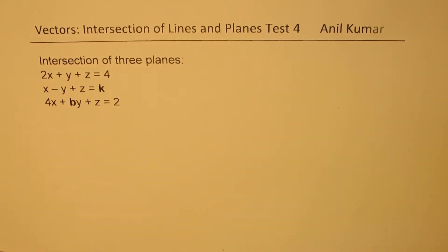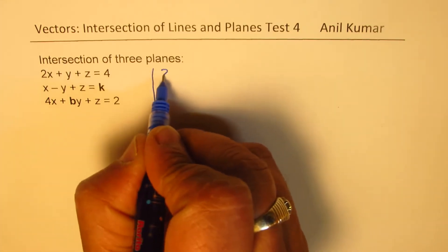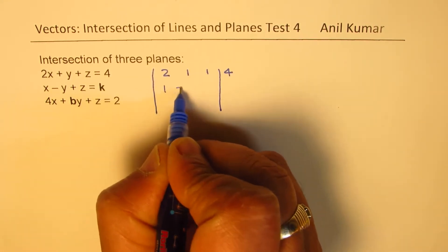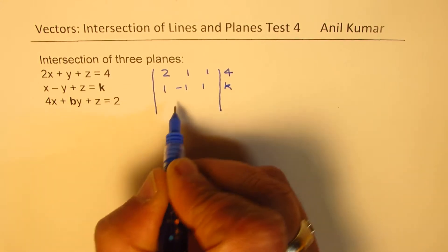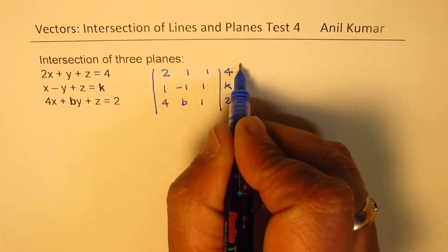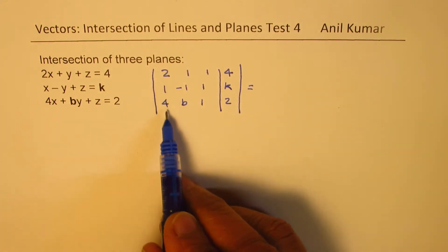So let's begin with the augmented matrix to solve. So we have 2, 1, 1, 4. This is 1, minus 1, 1, k. And here we have 4, b, 1, and 2.